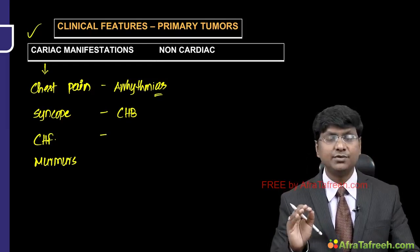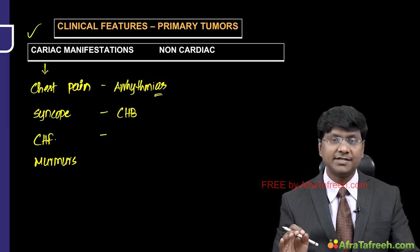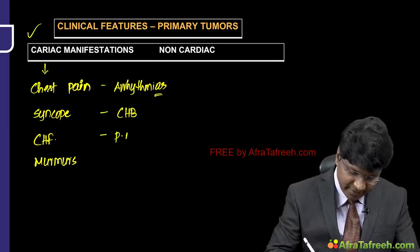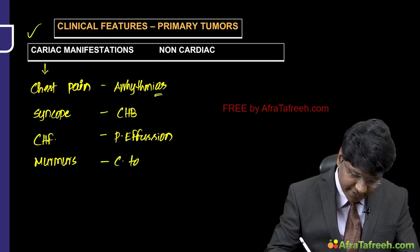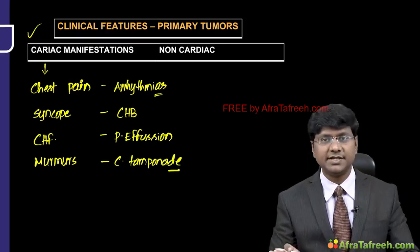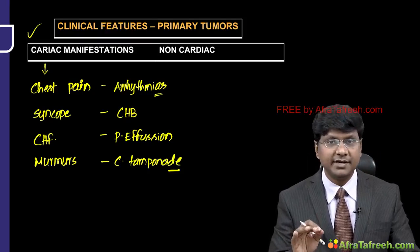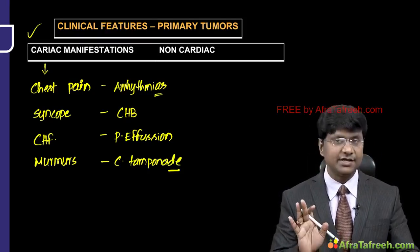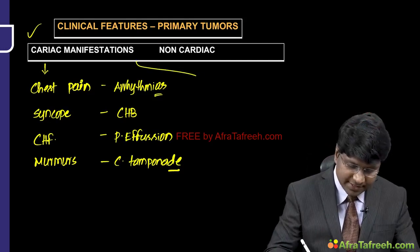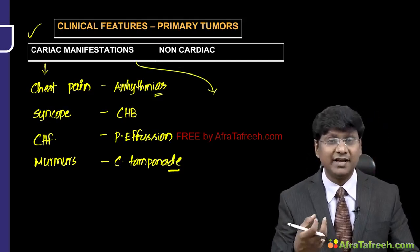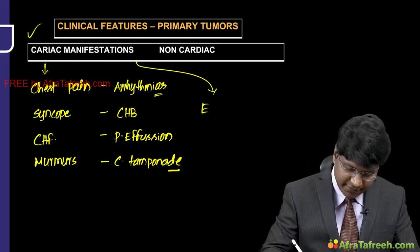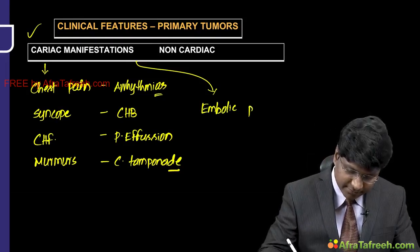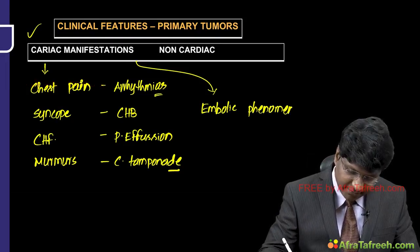These tumors can also cause serous cavity abnormalities in the form of pericardial effusion, and the emergency presentation is cardiac tamponade with sudden onset dyspnea, requiring emergency pericardiocentesis. Additionally, these tumors are fragile and friable; once they rupture, they go into the systemic circulation as emboli, causing embolic phenomenon.